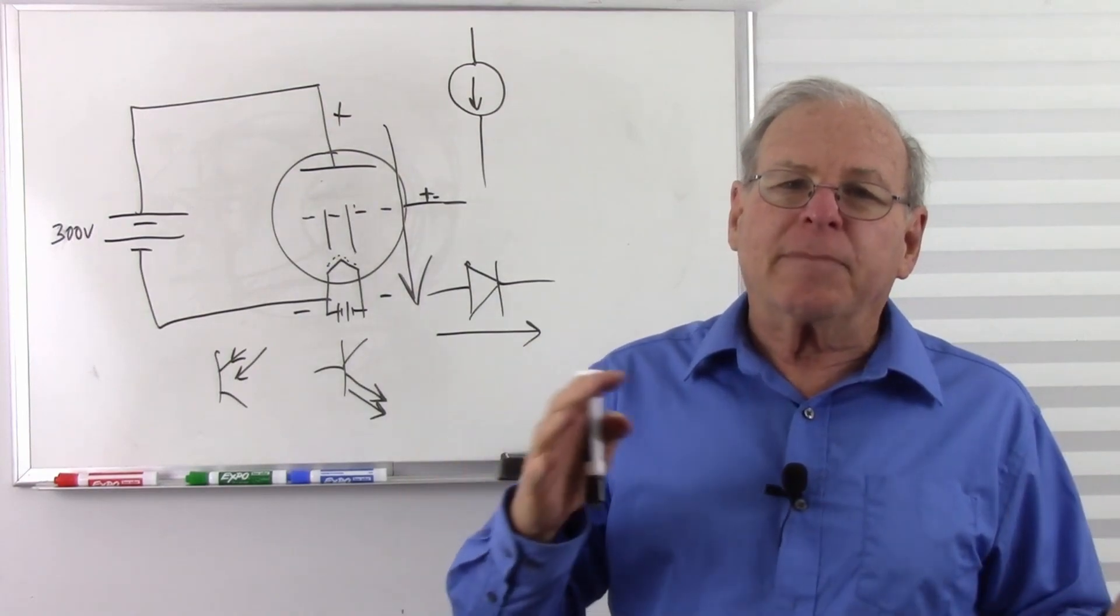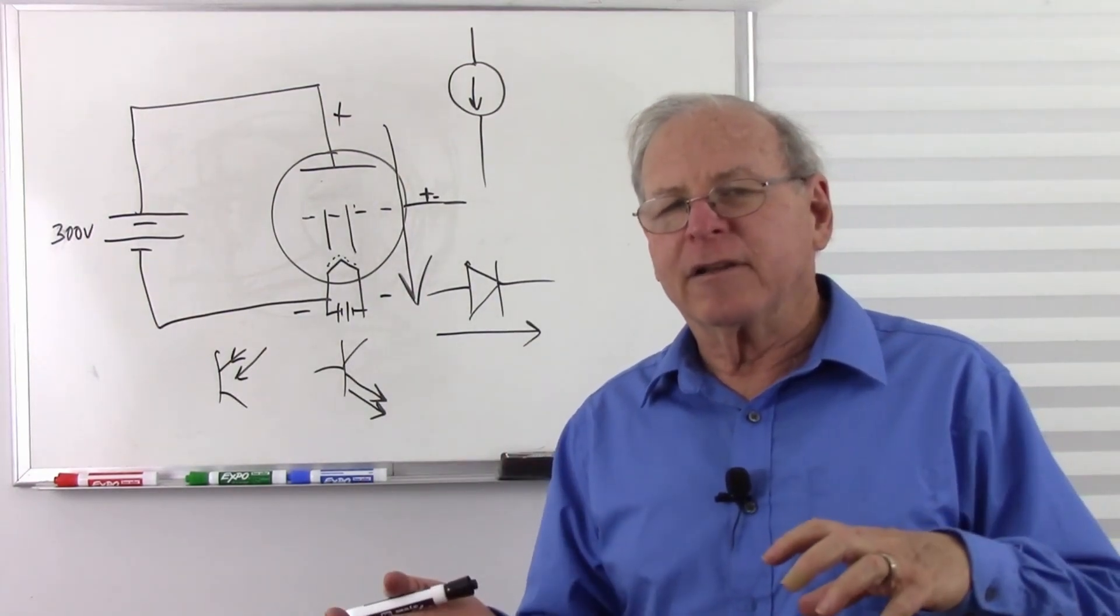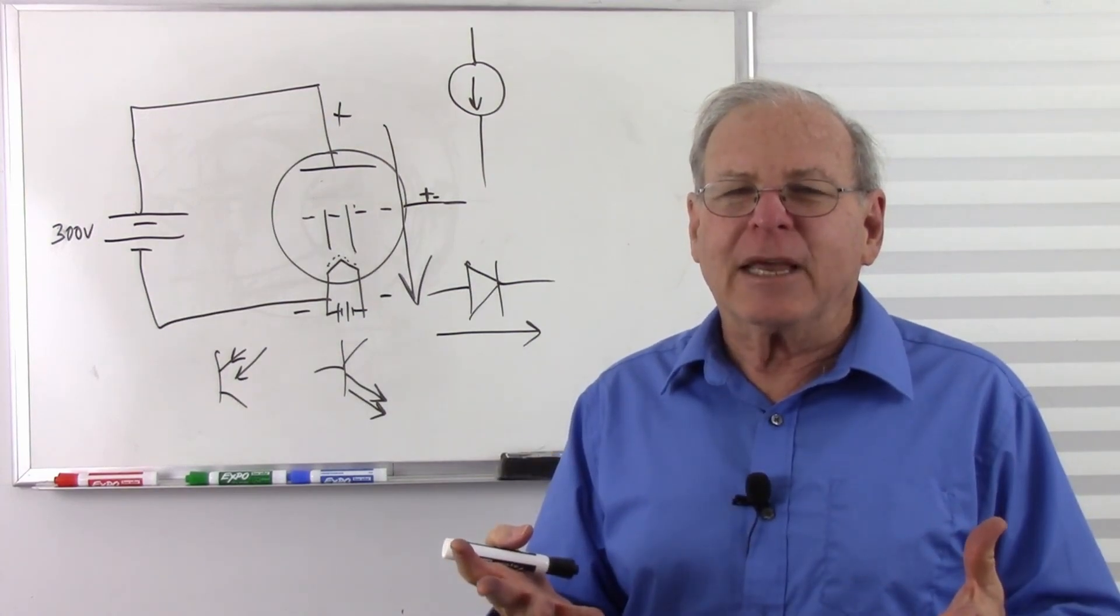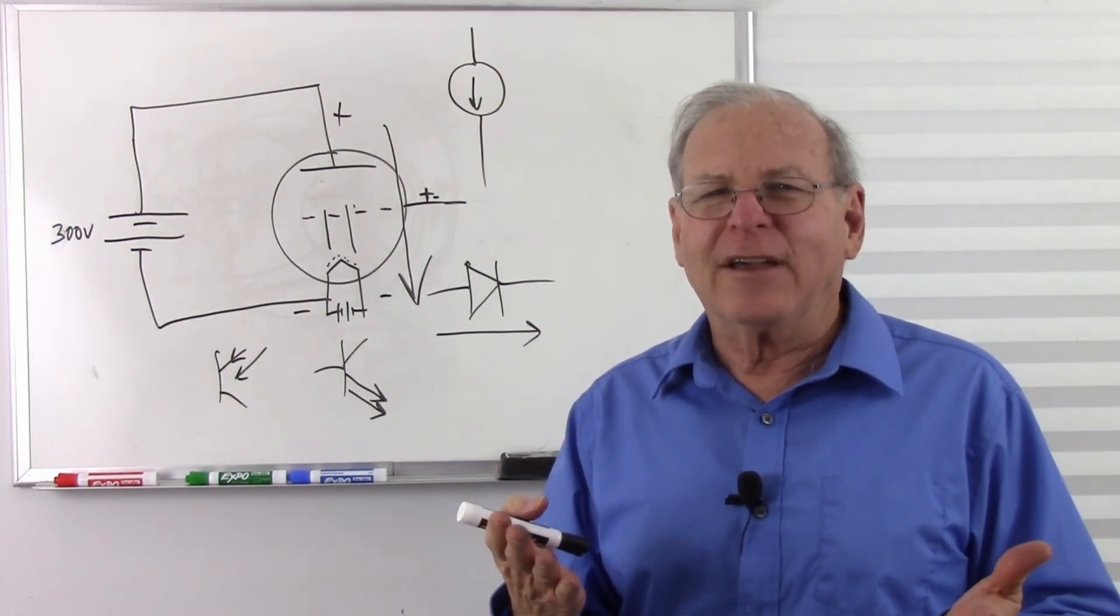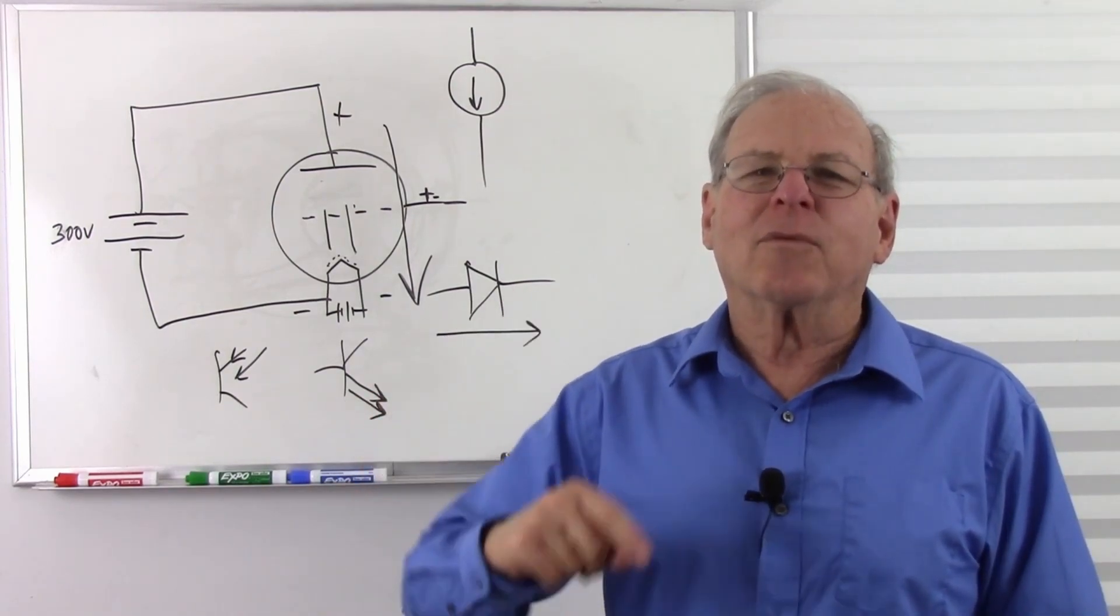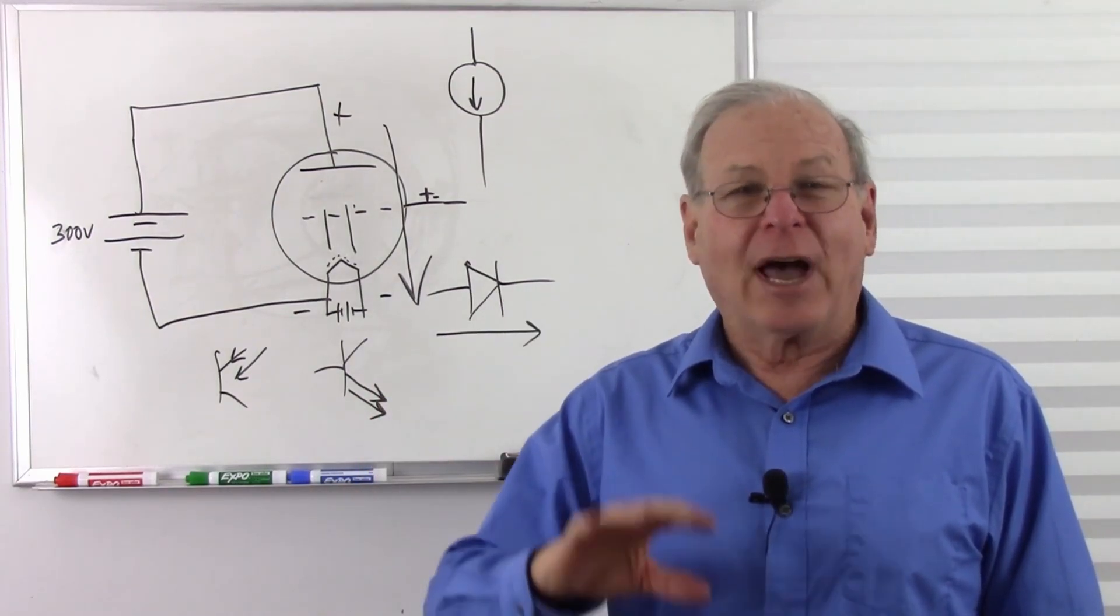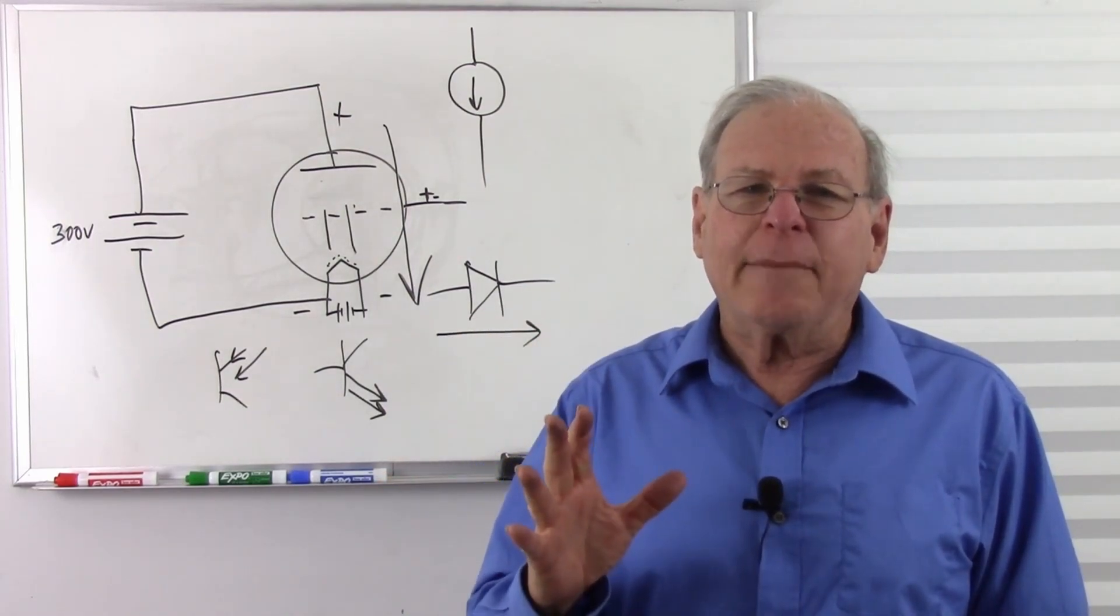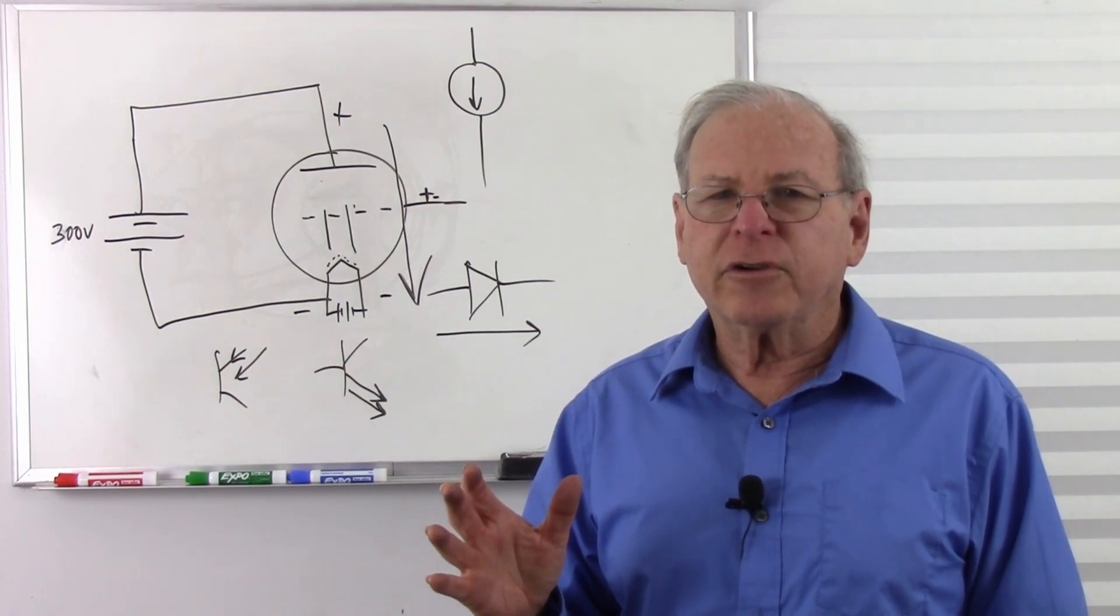And academia used to be split. Some people taught electron flow. Some people taught conventional flow. So I went through electron flow to begin with, and then we got into solid state devices. And the instructor came in and said, remember that electron flow? Forget it. We're going to use conventional flow now. So I had to learn to go both ways. So most of academia has settled on conventional flow, too.